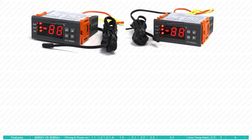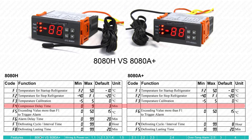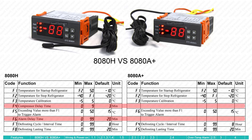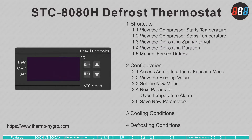The STC-8080H and 8080A Plus are similar, but the 8080H offers two additional options. First, the compressor delay time is editable in the 8080H, unlike the 8080A Plus which has a fixed three-minute delay time. Also, the 8080H allows the user to set an alarm delay time from 0 to 99 minutes, which the 8080A Plus does not have. Therefore, we'll use the 8080H as our example.